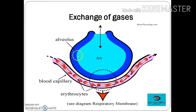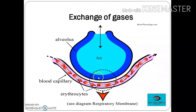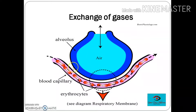The upper structure here is of alveoli, and with this blue colored boundary is the squamous epithelium which lines the inner side of the alveoli. Beneath this alveoli, this is the diagram of the blood capillary.